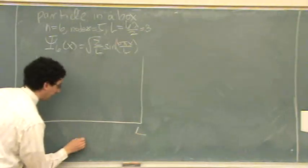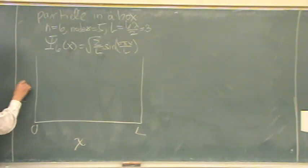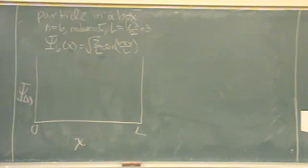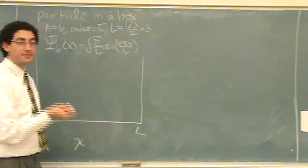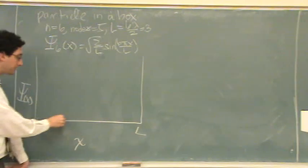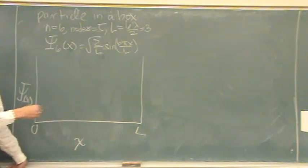0, l, and this is the x-axis. Here's psi of x. I have 5 nodes. So again, the way I do it is equally distribute 5 dots in the box.